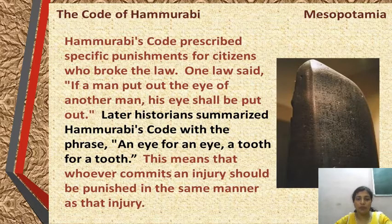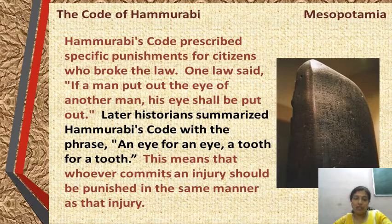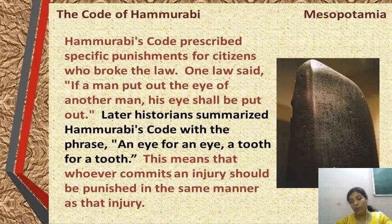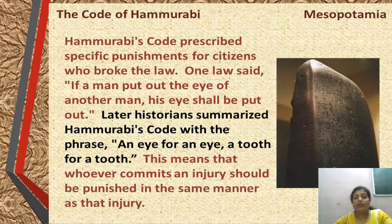Hammurabi's court prescribed specific punishments for citizens who broke the law. One law said: if a man put out the eye of another man, his eye shall be put out — tit for tat. Later historians summarized Hammurabi's code with the phrase 'an eye for an eye, a tooth for a tooth,' meaning whoever commits an injury should be punished in the same manner as that injury.